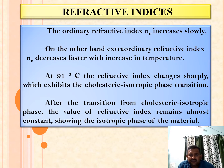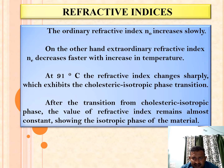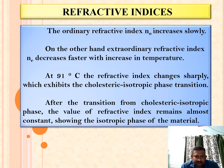The ordinary refractive index N0 increases slowly. On the other hand, extraordinary refractive index Ne decreases faster with increasing temperature. At 91 degrees Celsius, the refractive index changes sharply, exhibiting the cholesteric to isotropic phase transition. After the transition from cholesteric to isotropic phase, the value of refractive index remains almost constant, showing the isotropic phase of the material.